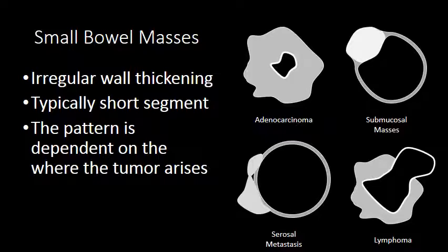Lymphoma tends to cause transmural wall thickening of the bowel, and it can involve a longer segment than, say, an adenocarcinoma. Lymphoma also has what's called pseudoaneurysmal dilation, where the myenteric plexus is involved and replaced by lymphoma, resulting in inability of the bowel to peristalse and a pseudoaneurysmal dilation. Let's look at each of these in a little more detail.